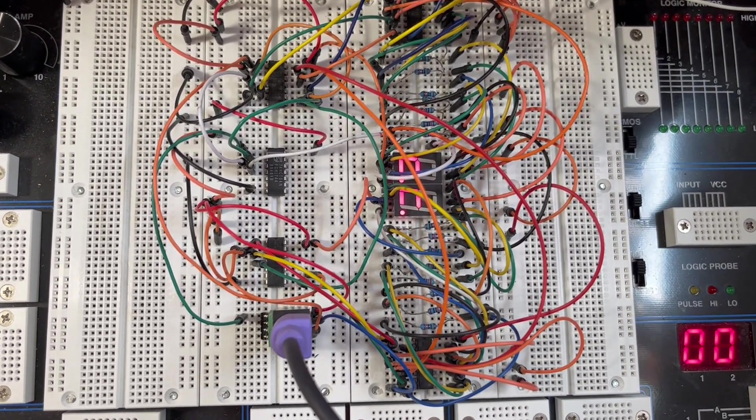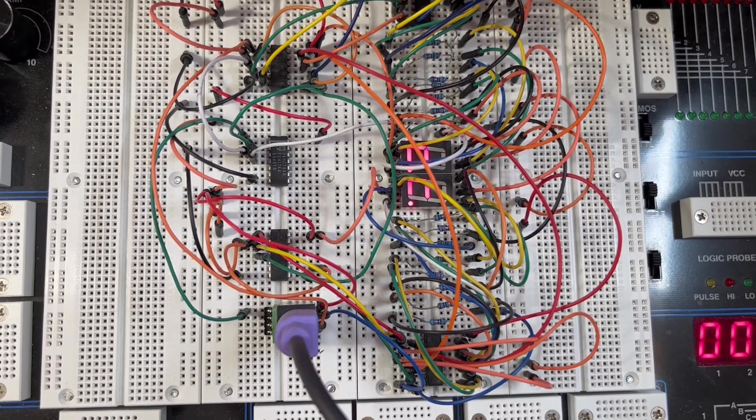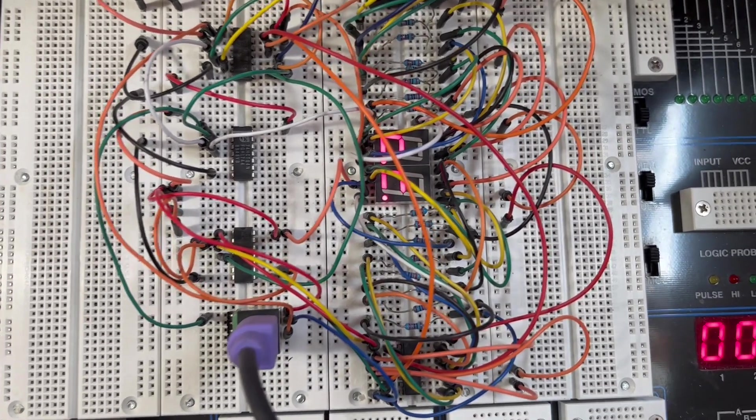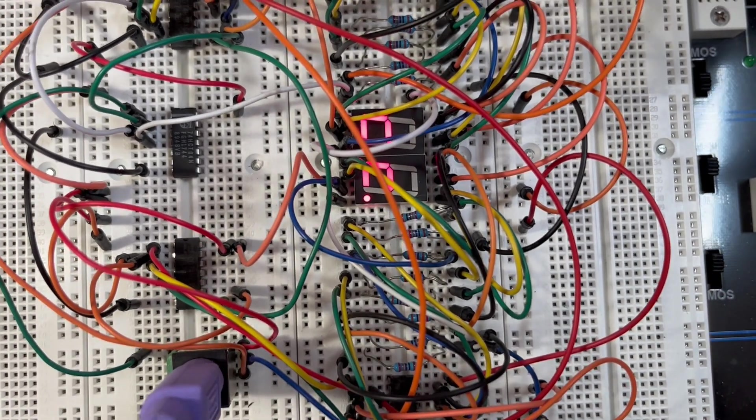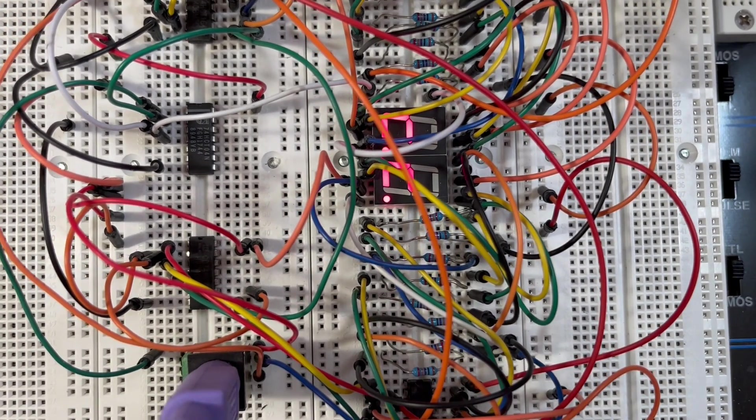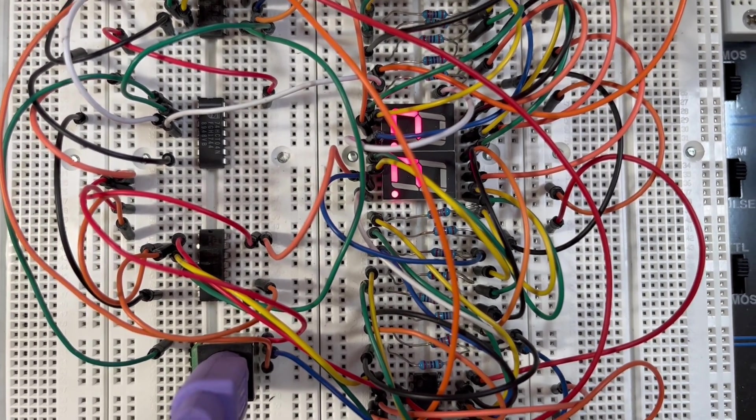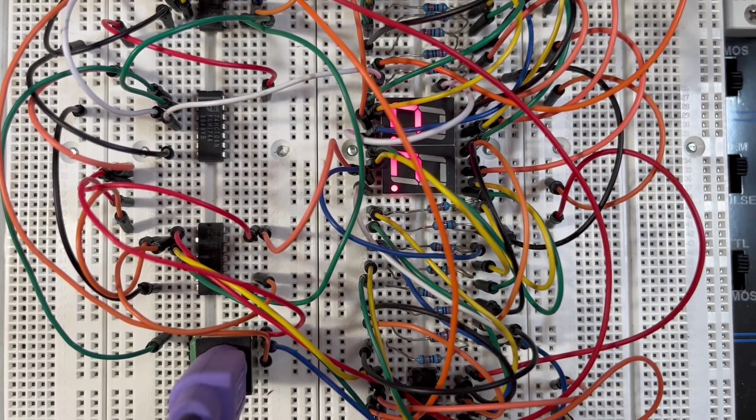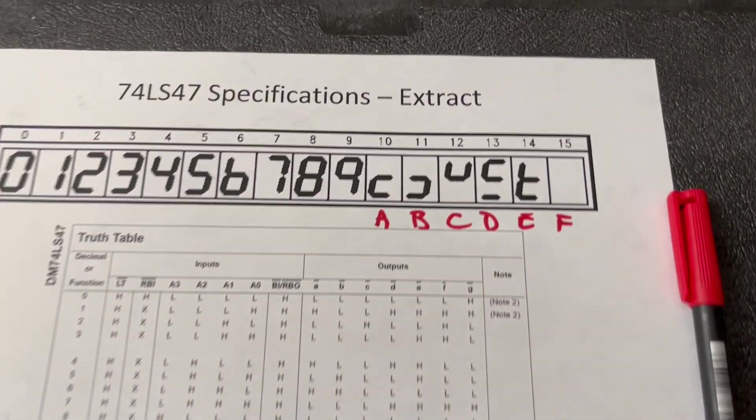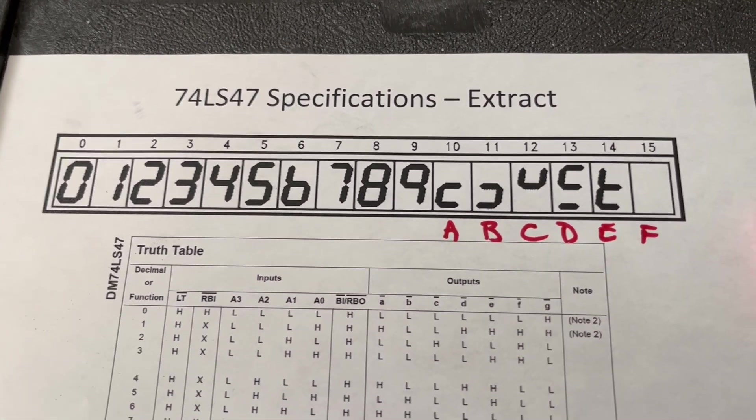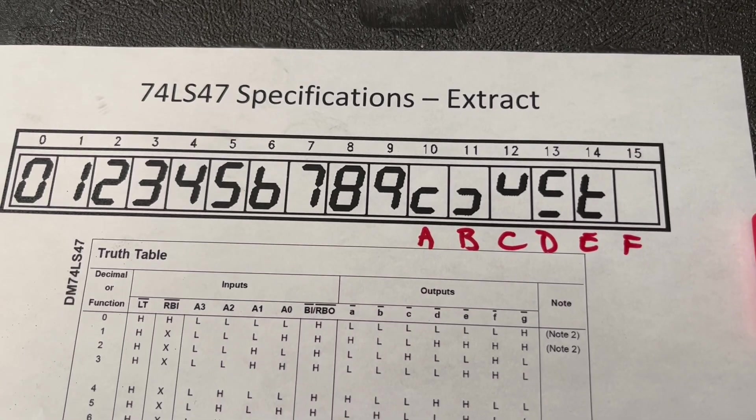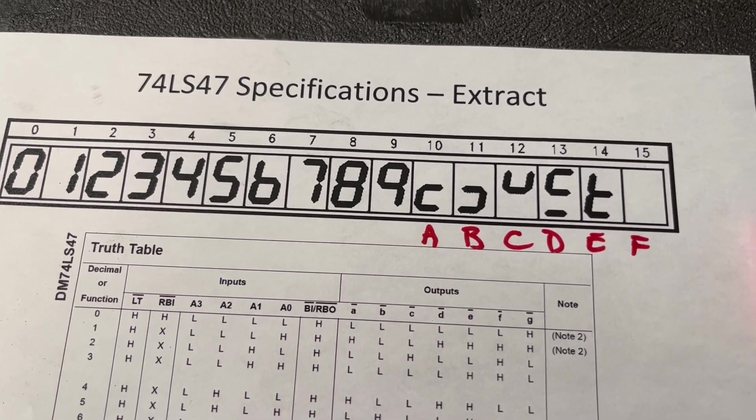Using standard seven-segment displays, they were only able to recognize numbers 0 to 9, but not 10, 11, 12, 13, 14, or 15. According to the extract of the manufacturer specs right here, remember the symbols you could read for A, B, C, D, E, and F.